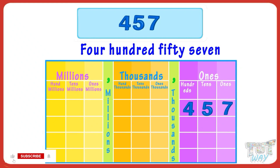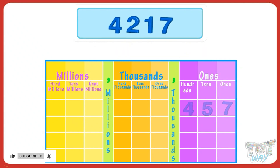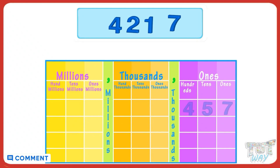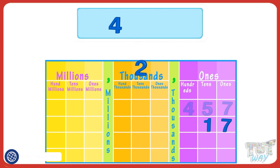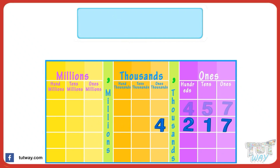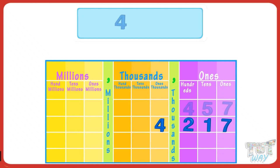Now let's read a four-digit number. Here we have a number placed below the place value chart starting with ones place: 7 below ones place, 1 below tens place, 2 below hundreds place, 4 below thousands place. You have to read the number separately from all periods. 4 is in the thousands period.